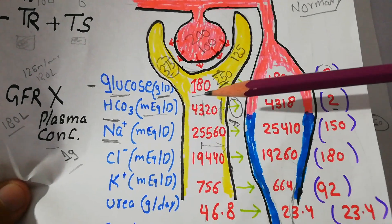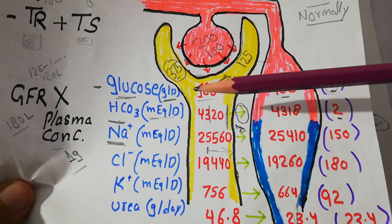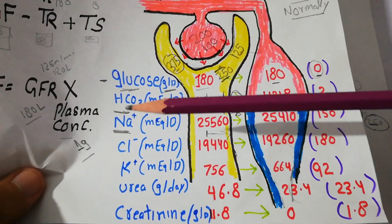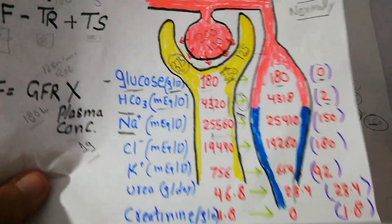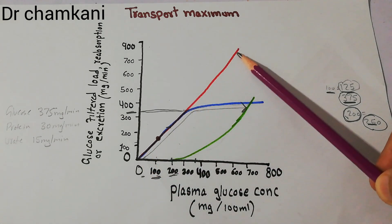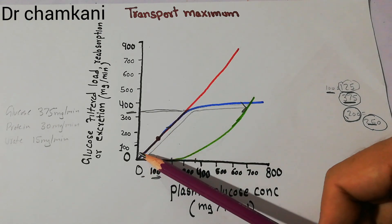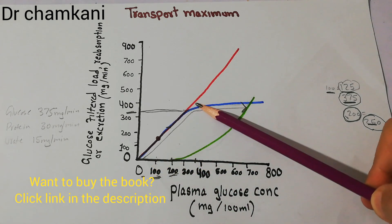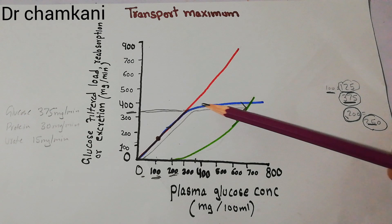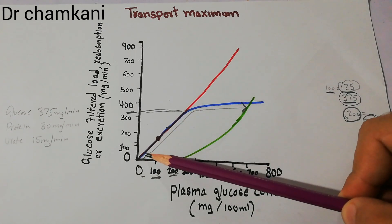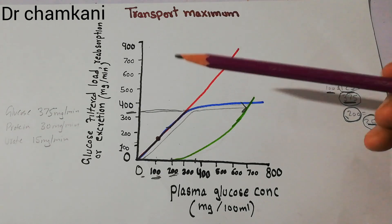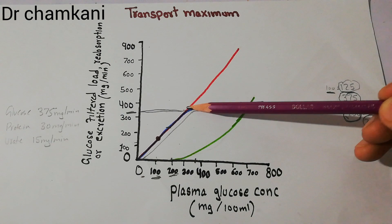The glucose in the proximal tubule will be reabsorbed from the proximal tubule into the blood up to a limit of 375 milligrams per minute. When this limit is reached, the remaining glucose cannot be reabsorbed because the ride sharing of sodium has certain limitations. Initially, as plasma concentration was increasing, the reabsorption was also increasing. But when 375 mg of load is achieved in the proximal tubule, after that point no reabsorption will occur, and that point is known as transport maximum for glucose.